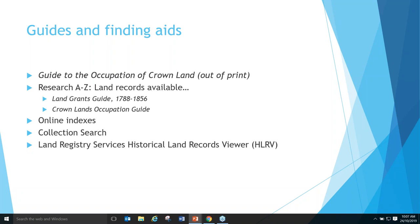You can also look at our website at the Research A to Z. There's the land grants guide for 1788 to 1856, which runs through records in the collection to do with land grants, and the Crown lands occupation guide, which provides an overview of those early records of the occupation of Crown land. There's a range of indexes that can help with your search and, of course, collection search — our catalogue — which lists everything in the collection including our online indexes. And then the Historical Land Records Viewer, where they've started to put land title records online.